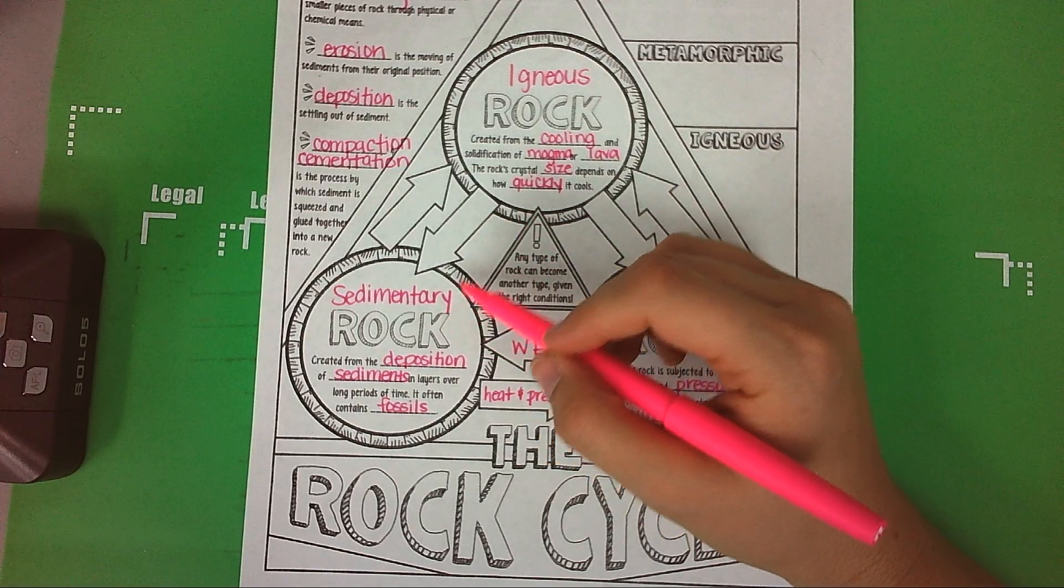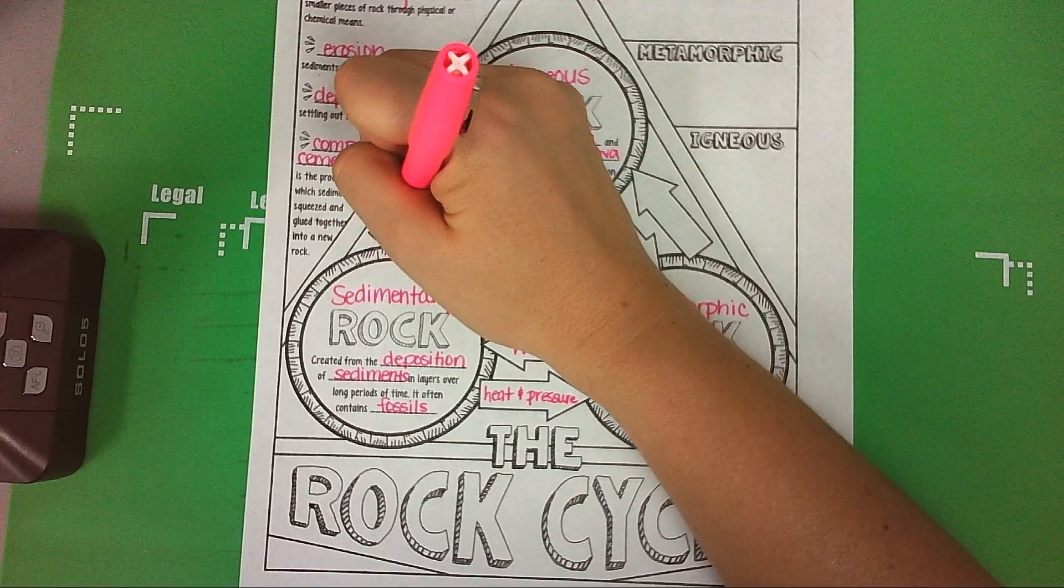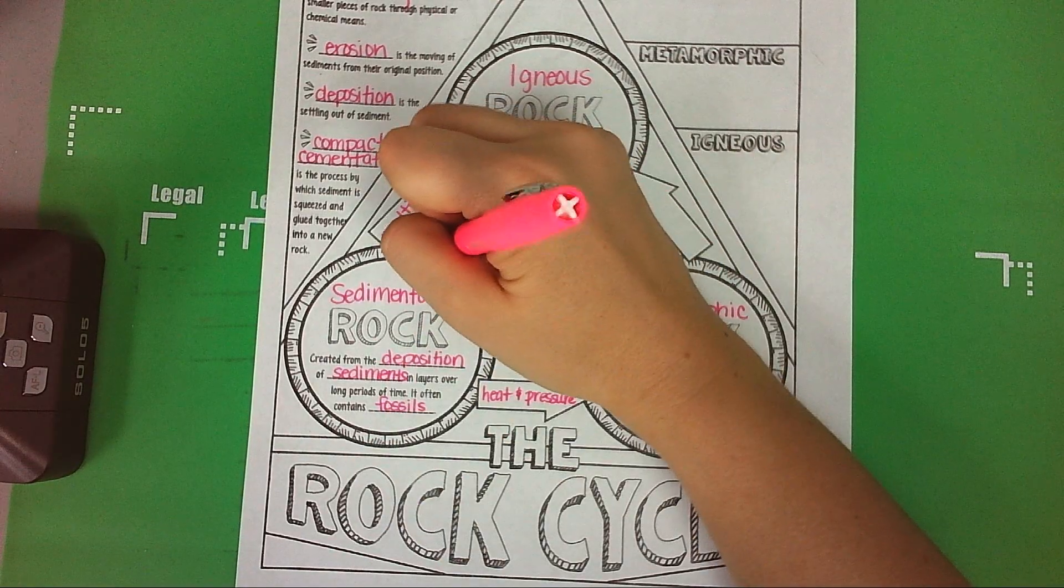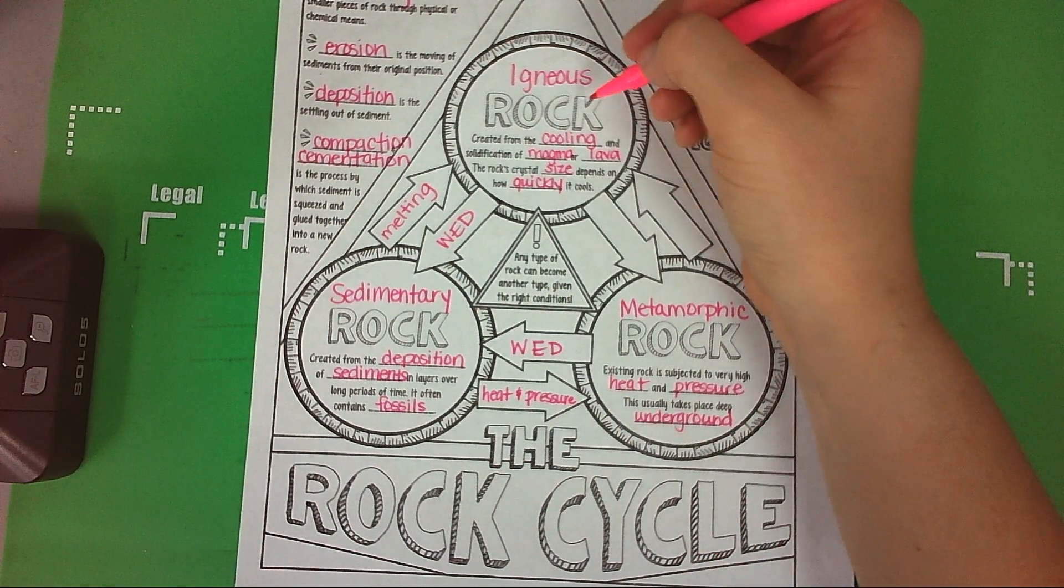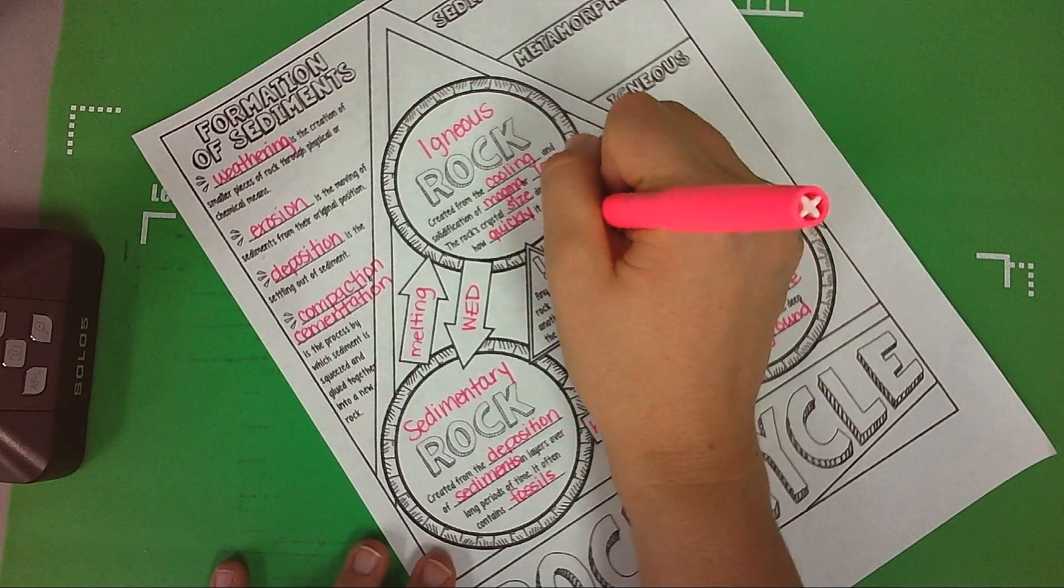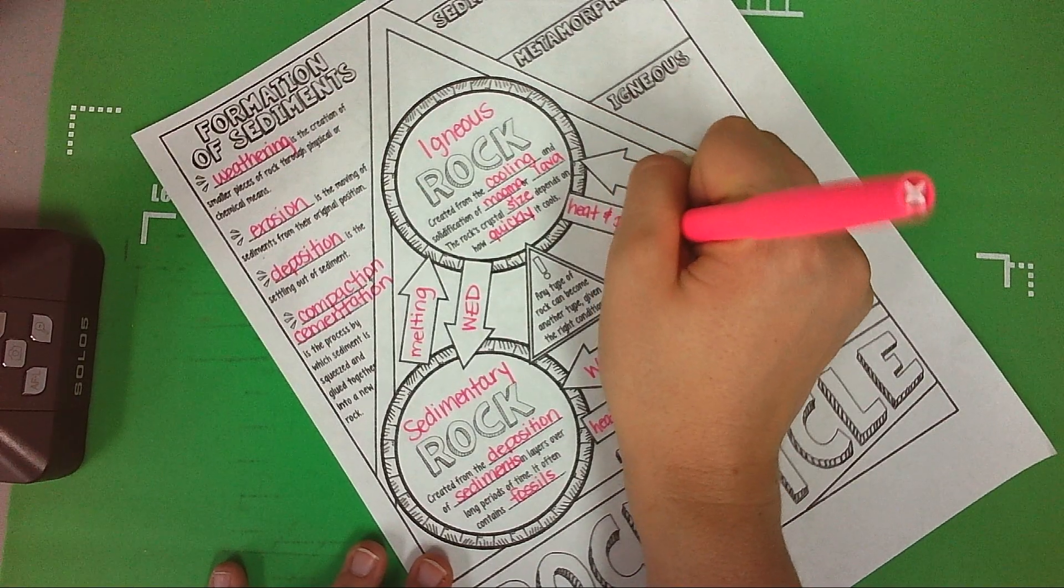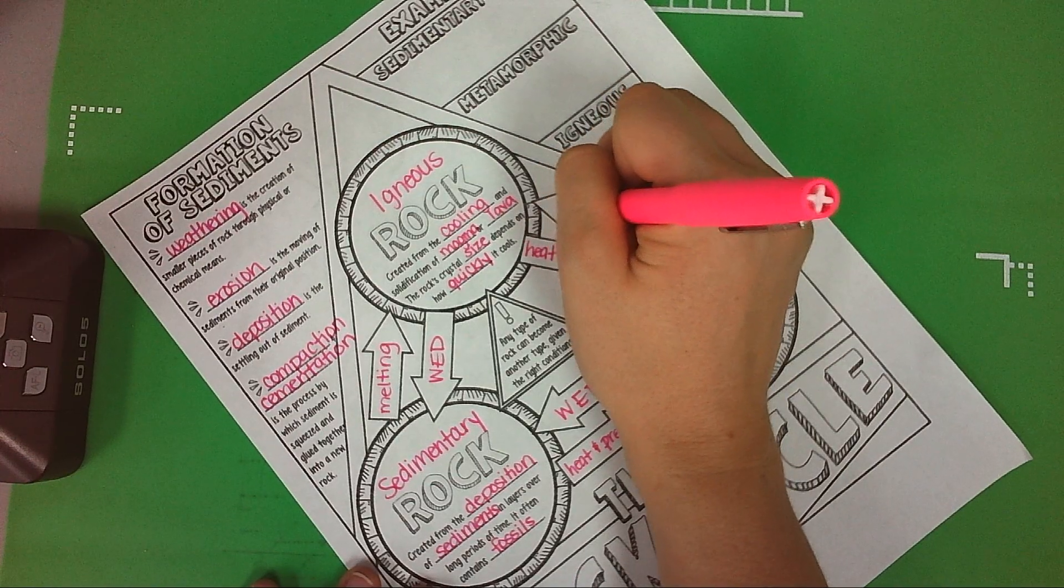Sedimentary rock, when it is melted, can turn into igneous rock. Igneous rock can turn into sedimentary rock through weathering, erosion, and deposition. Igneous rock can turn into metamorphic rock through heat and pressure, and metamorphic rock can turn into igneous rock through melting.